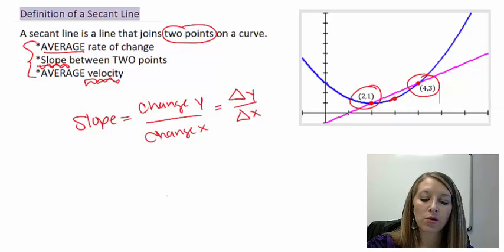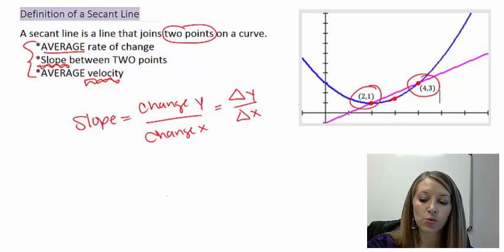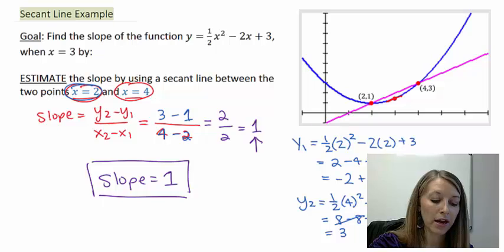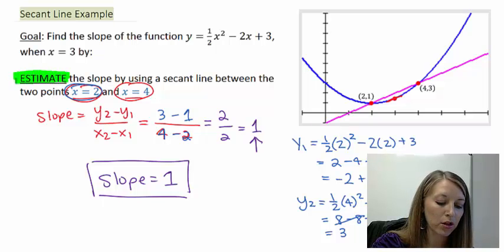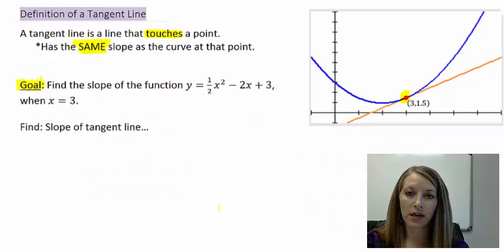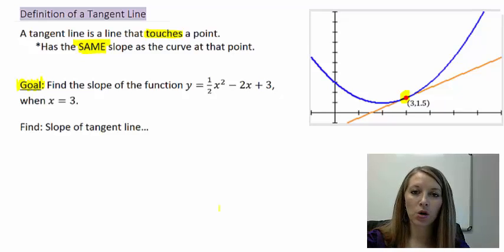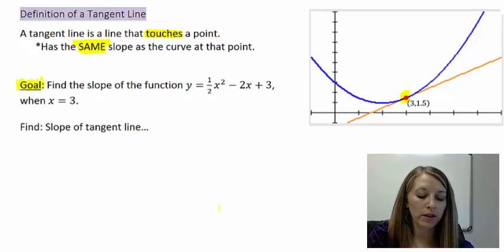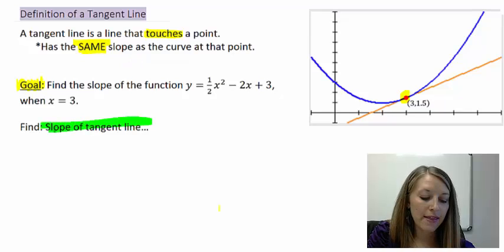The secant line goes through two points very close to the point in question, and it gives us an average rate of change — so it estimates the slope of our quadratic equation at that nearby point. What we really want to do is figure out the slope of the tangent line. The tangent line touches our equation at the exact point in question and has that exact same slope at that point.